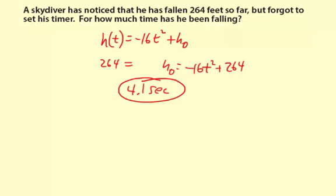And then all we did is we calculated the x-intercept. And so we found that the input of 4.1 seconds would give you an output of 264. So that's how we found out the 4.1 seconds for the time.